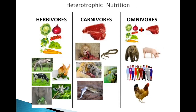Heterotrophic nutrition is broadly divided into herbivores, carnivores, and omnivores. Herbivores are those organisms that only depend upon green plants. Carnivores are those that depend upon flesh. Omnivores are those organisms that depend on both plants and flesh.